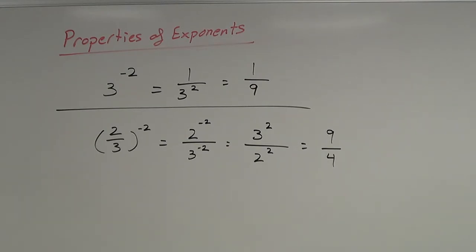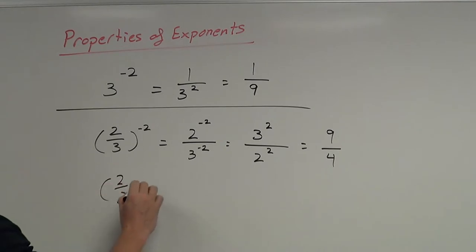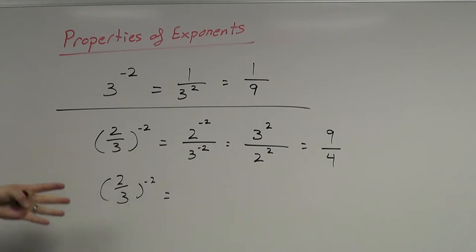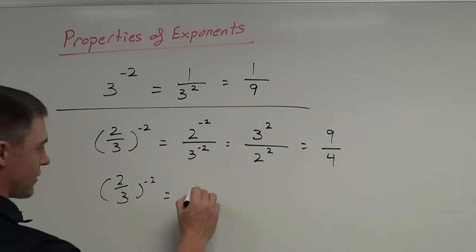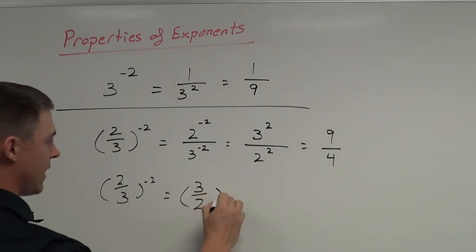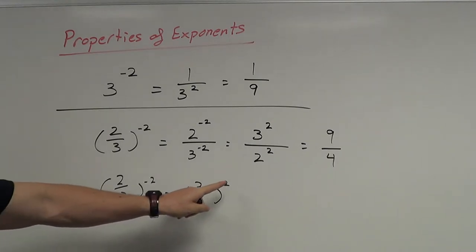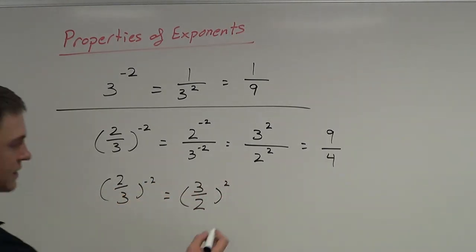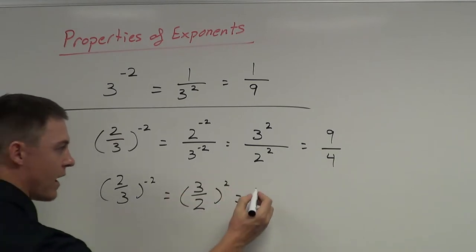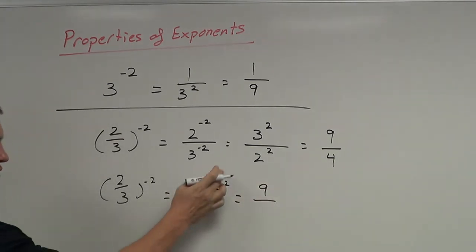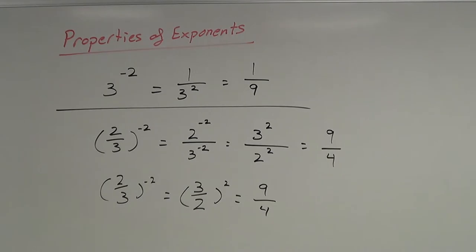That's one way to look at it. Another way: you can also think of it this way — if I take the fraction and flip it initially, that will change the exponent outside from a negative 2 to a positive 2. Then all you need to do is take this exponent of 2 and apply it to the numbers inside: 3 squared is 9 and 2 squared is 4.